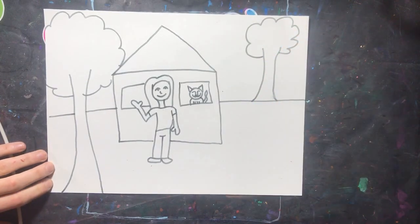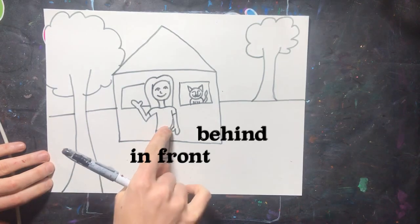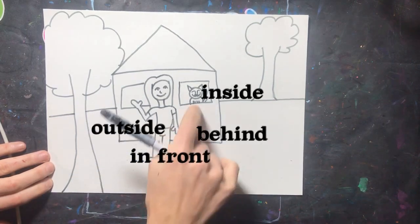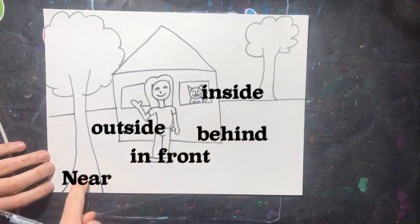So we have our person in front and the house behind. The cat is inside, the person is outside, the big tree is near, and the small tree is far.